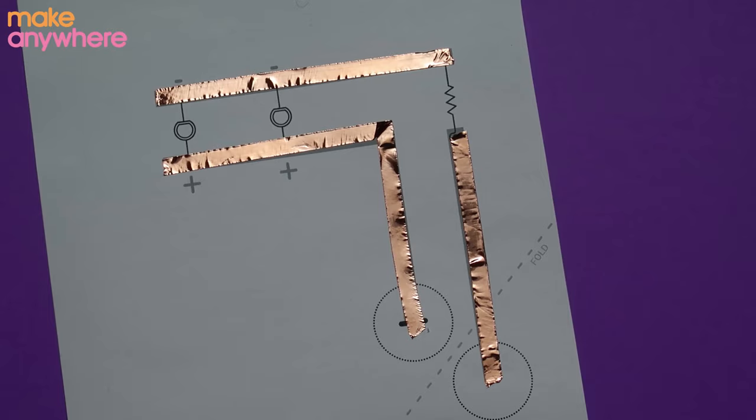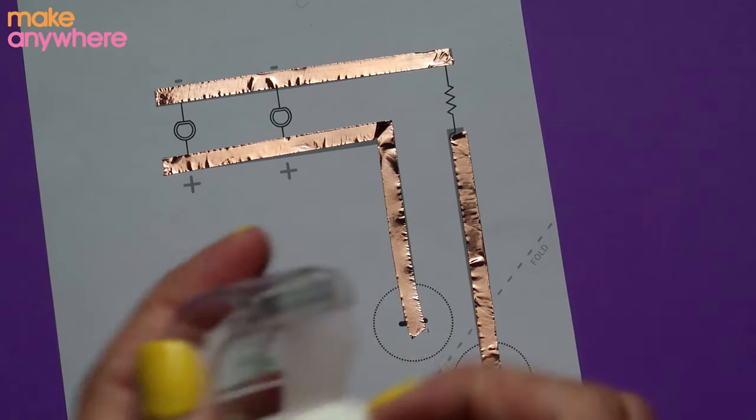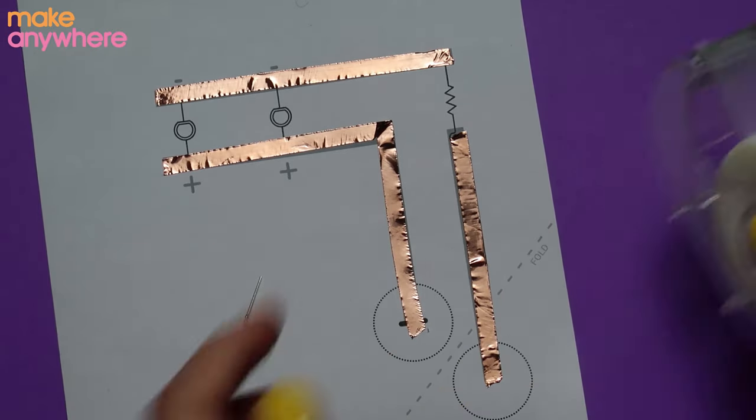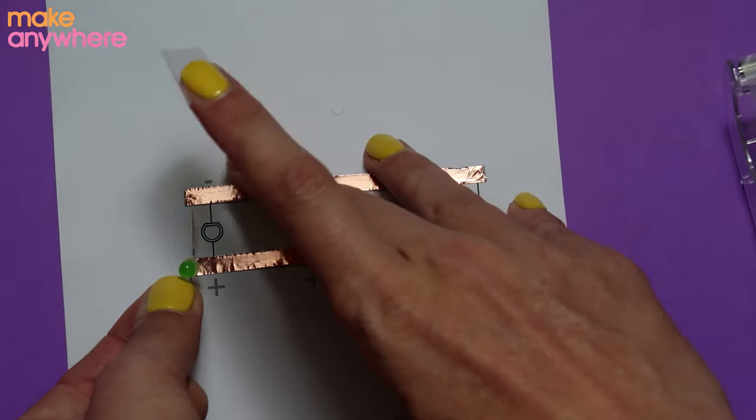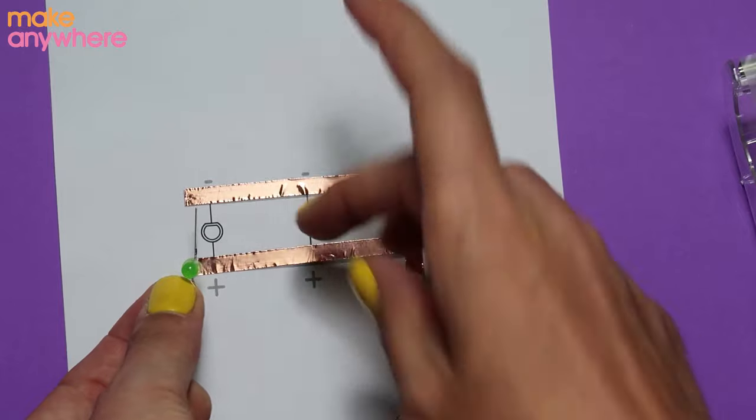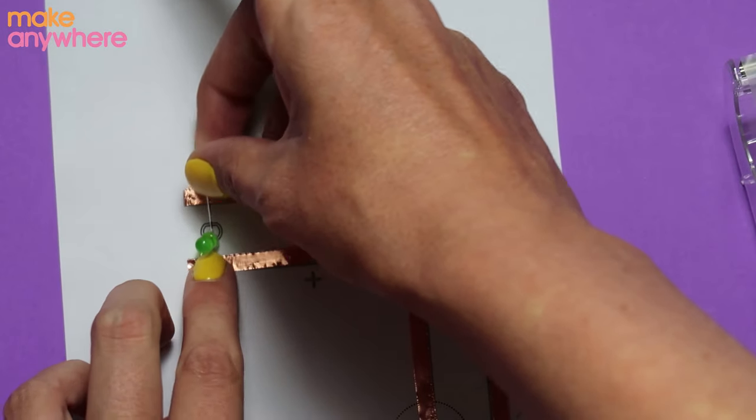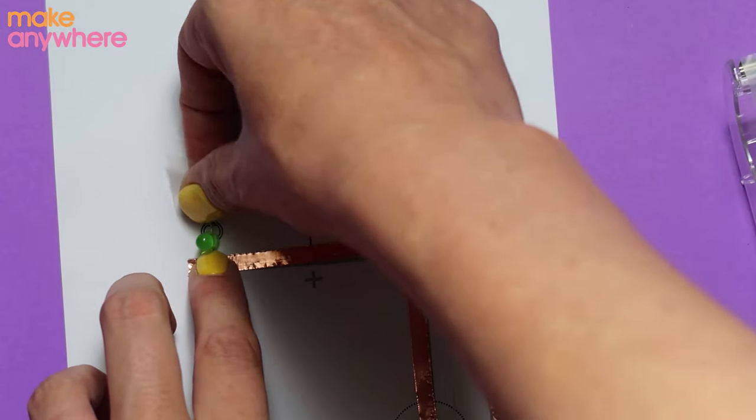Now we're going to add our components. Using your clear tape we're going to stick the legs down on top of the copper tape. We need to make sure it's on top on the shiny side because that's the conductive. Underneath where the glue is it's sticky and it'll be insulative and the electricity won't run through.